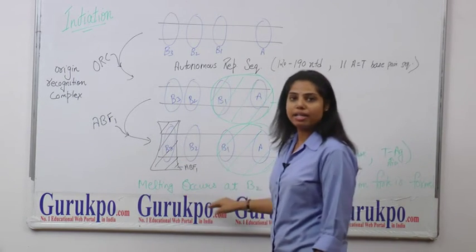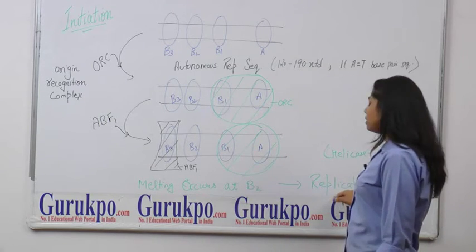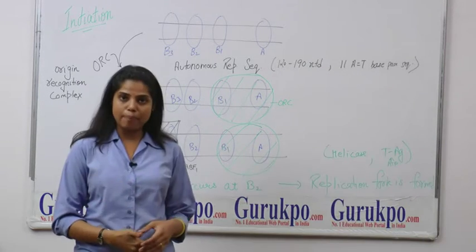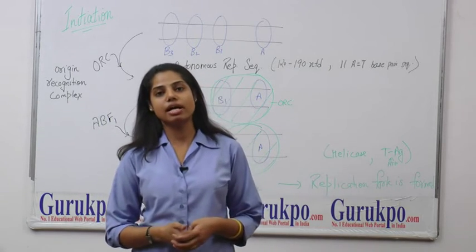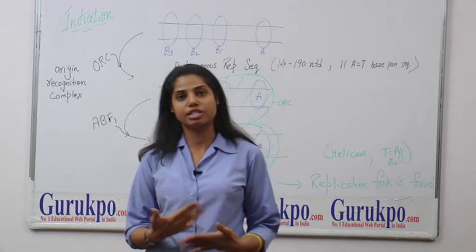This melting occurs after which the replication fork is formed. This replication fork is formed with the help of helicase as well as a protein named as TAG protein.